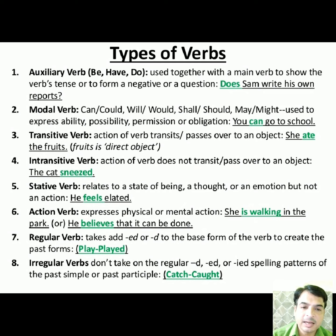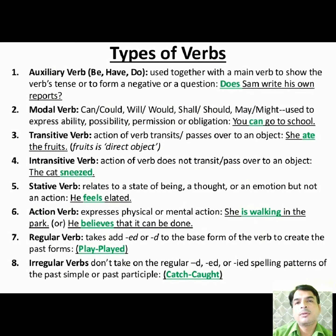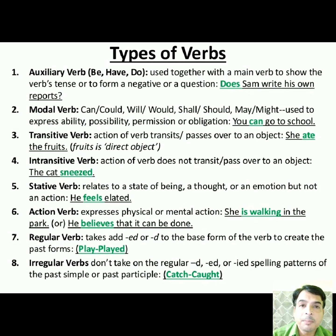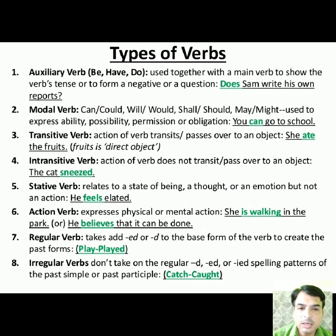The second type of verb is the modal verb. Modal verbs are also a kind of helping verb. They are: can, could, will, would, shall, should, may, might, and ought to. Modals also act as helping verbs and they are used to express ability, possibility, permission, and obligation. Obligation is something which you are supposed to do.